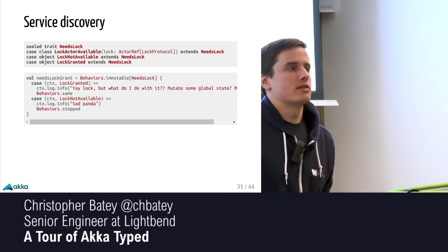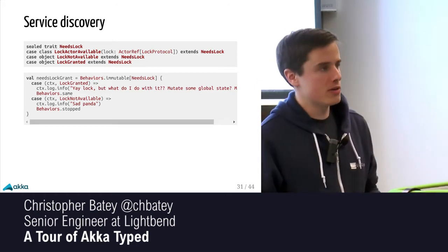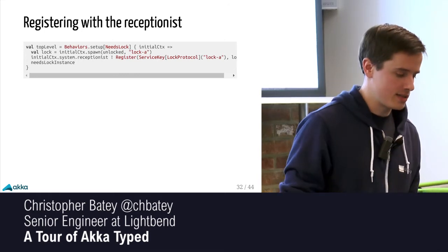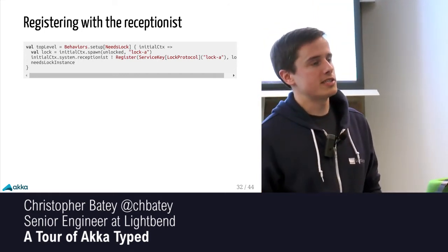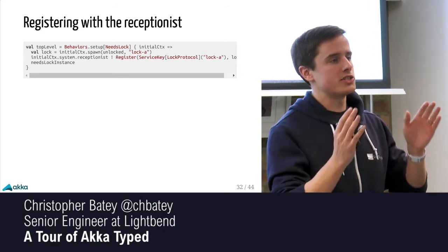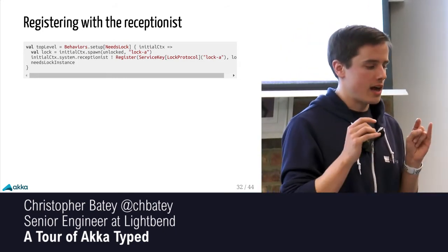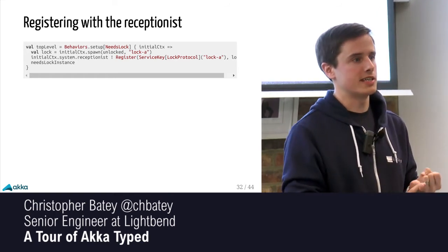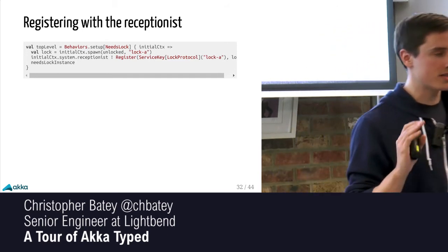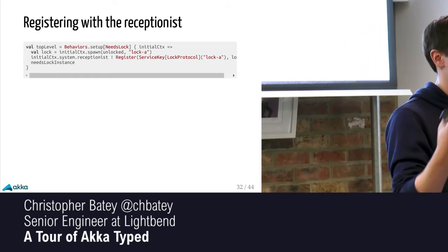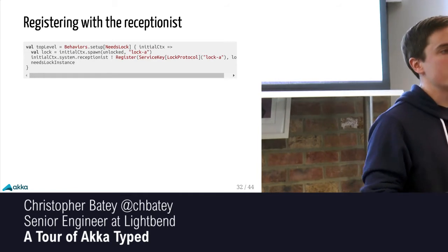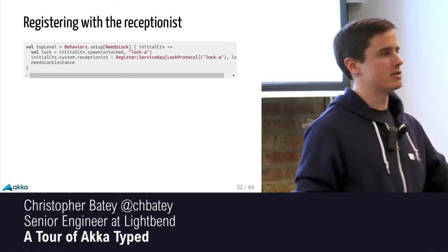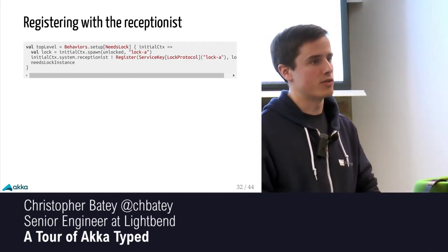Actor selection is probably one of the other biggest changes — how do you look up actors either in the same JVM or in a clustered setting? The answer is something called a receptionist. The receptionist is a registry — it's like service discovery, but for actor references. You can register references, and the key for registering something contains a type and a name. You can then either subscribe to get constant updates as new ones come up or go down, or just ask for a one-off list.